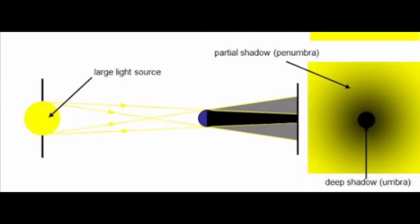This is because in extended source there are multiple points from which multiple rays are emitted. When the light rays coming from different points meet, there can be more light in some parts and less light in some parts.